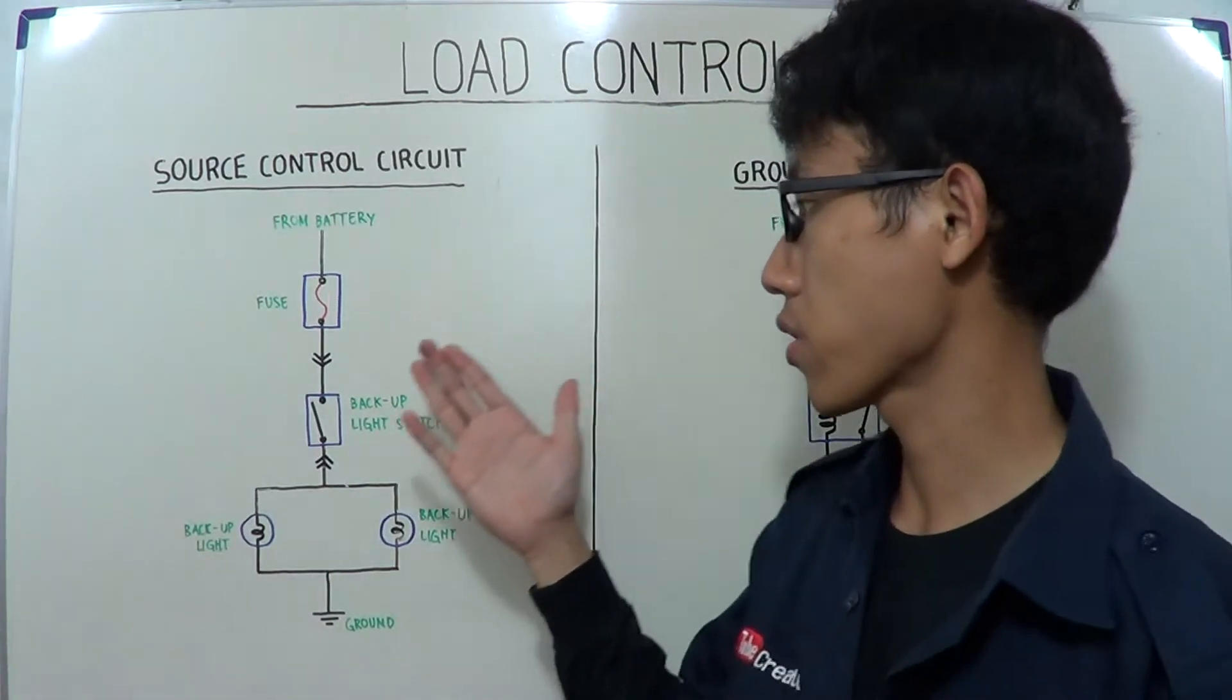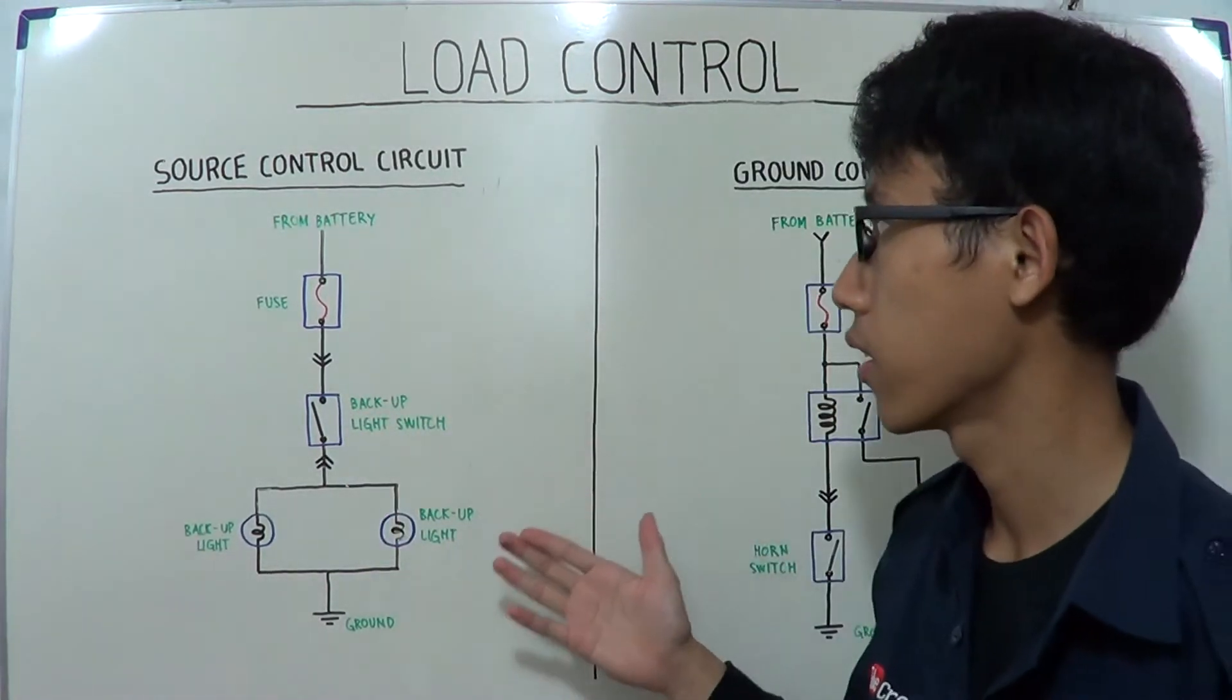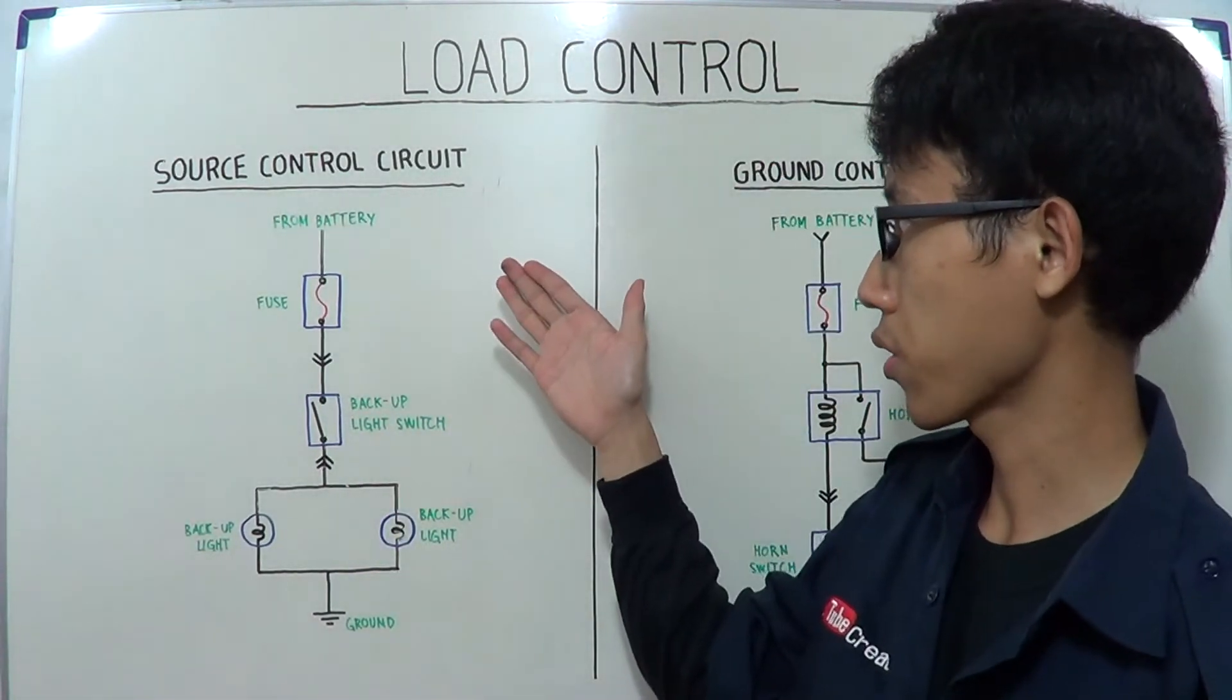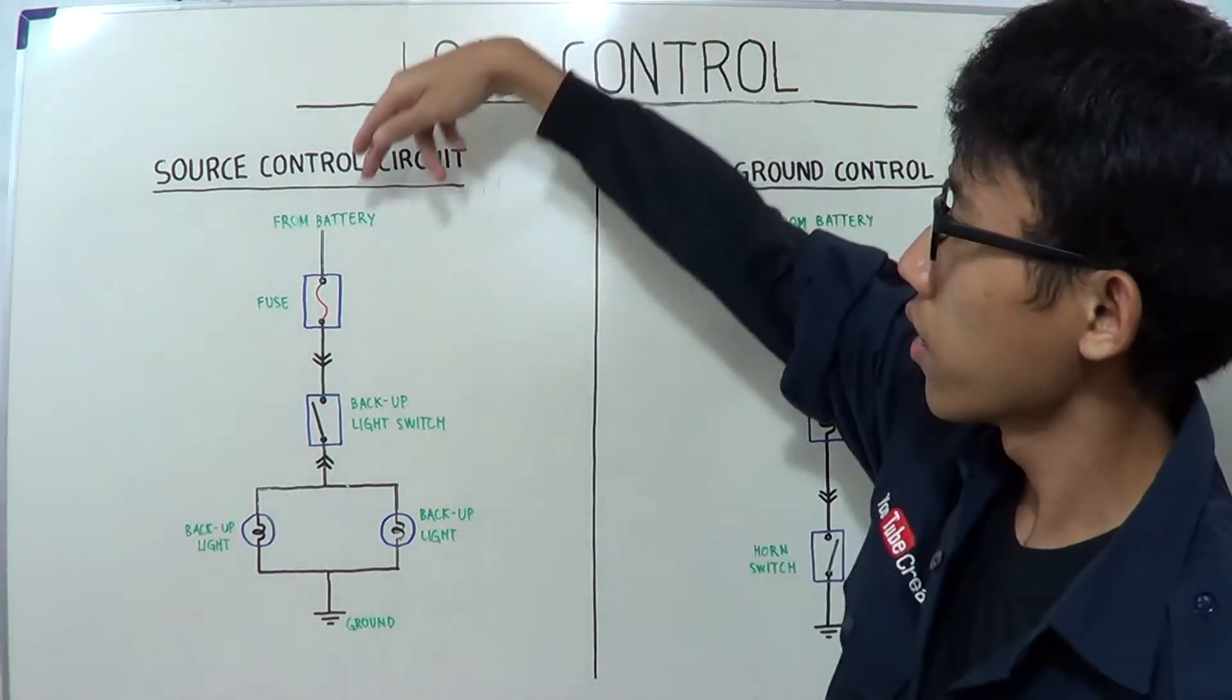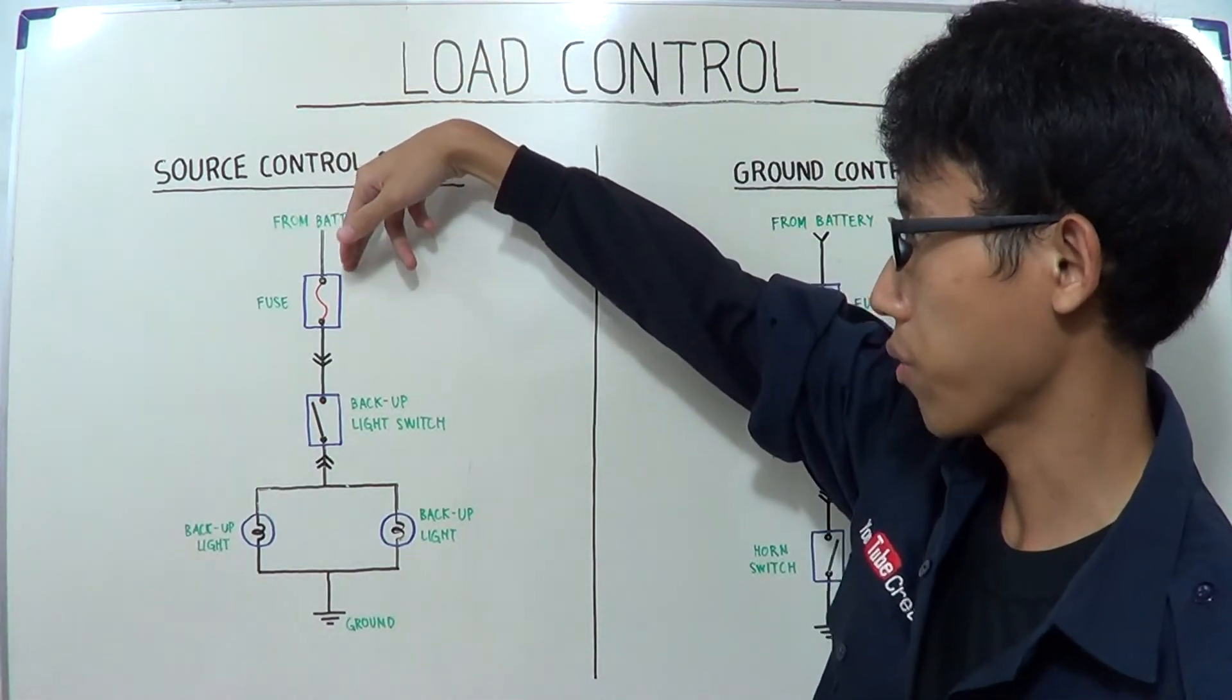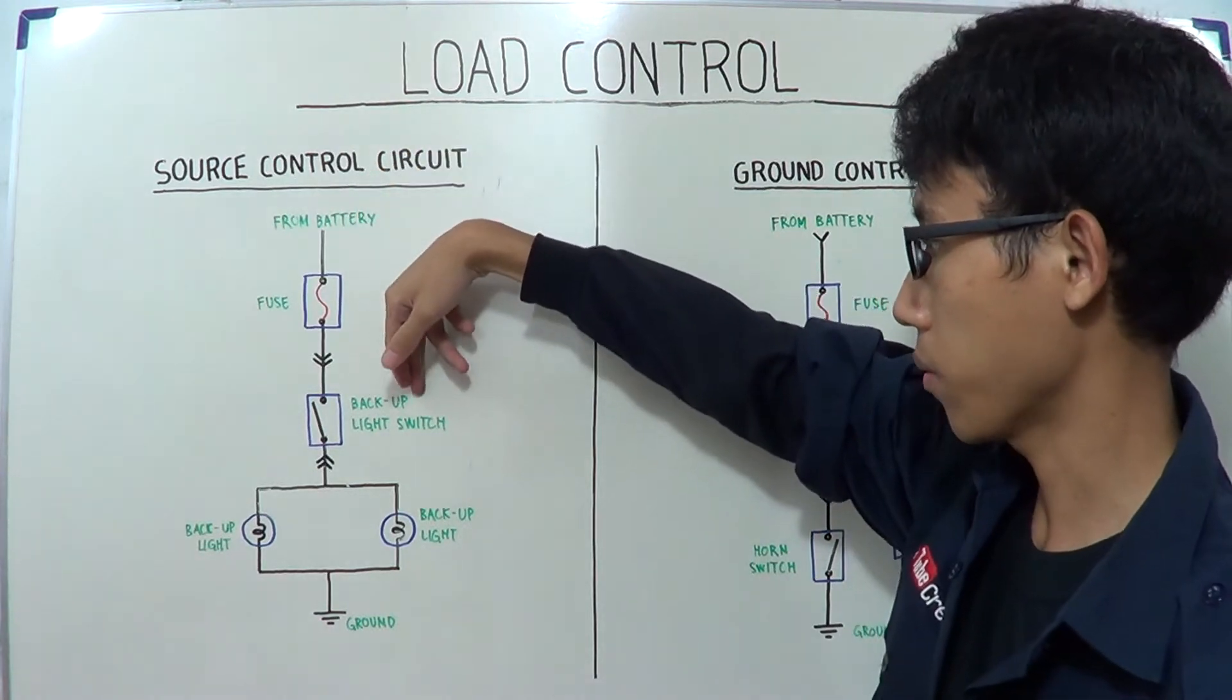So, let's see the first type of control circuit. In this control circuit, the electric current from the battery flows to the fuse and to backup light switch.